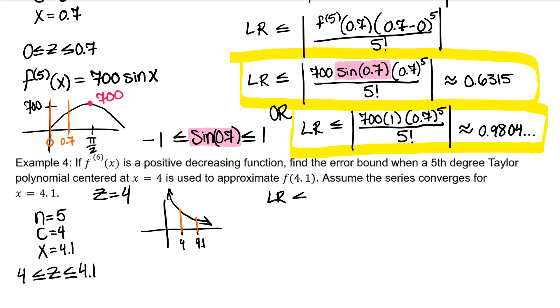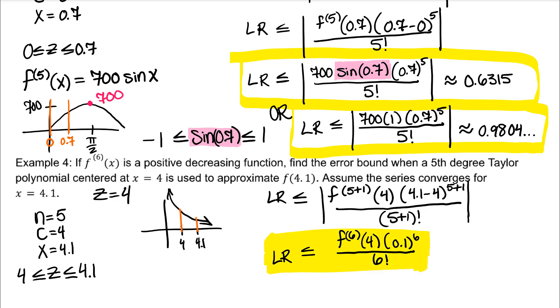Our Lagrange remainder will be less than or equal to the absolute value. F to the n plus 1 derivative of Z times x minus C to the n plus 1 over n plus 1 factorial. Simplify. And without knowing what our actual function is, that is as close as we can get. We can take off the absolute value because we know the sixth derivative of f of x is positive. And there is our Lagrange error bound.